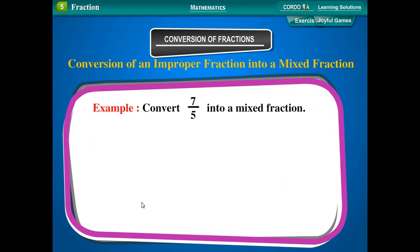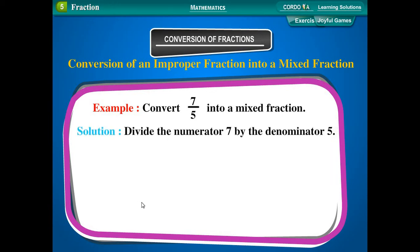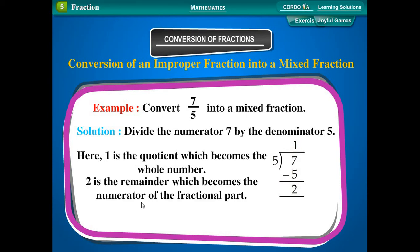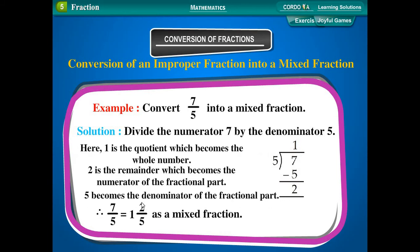Example: Convert 7 upon 5 into a mixed fraction. Solution: Divide the numerator 7 by the denominator 5. Here, 1 is the quotient, which becomes the whole number. 2 is the remainder, which becomes the numerator of the fractional part. 5 becomes the denominator of the fractional part. Therefore, 7 upon 5 is equal to 1 and 2 upon 5 as a mixed fraction.